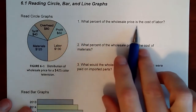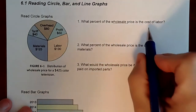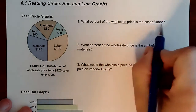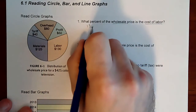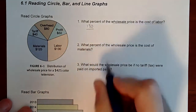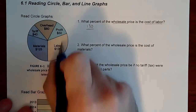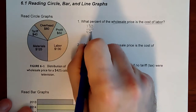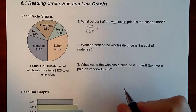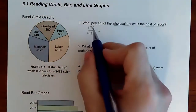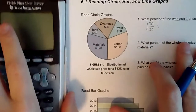What percent of the wholesale price is the cost of labor? If we look at cost of labor, it's $130. So it's 130 out of the total wholesale price of $425, which is all of the pieces added together. Anytime we're looking for a percent, we need a part out of a whole — 130 is the part out of 425.